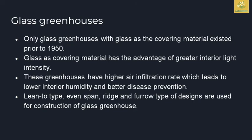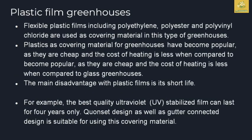Plastic film greenhouses use polyethylene, polyester, or polyvinyl chloride as covering material. Plastic became popular because it is cheap and the cost of heating is less compared to glass greenhouses. The main disadvantage of plastic film is its short life — the best quality UV-stabilized film lasts only up to four years. The Quonset and gutter-connected designs are suitable for plastic film covering.